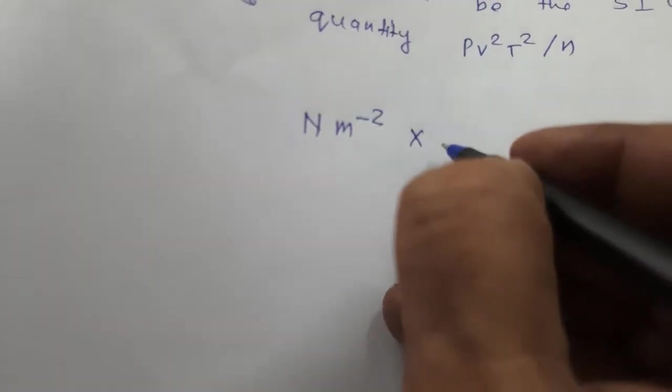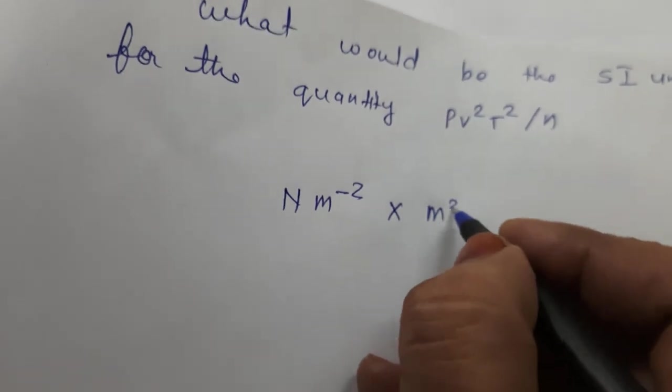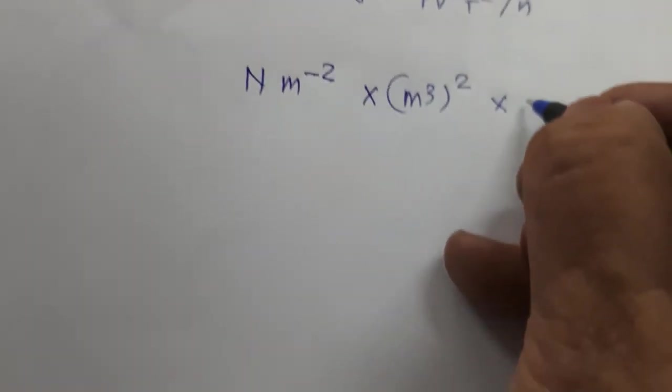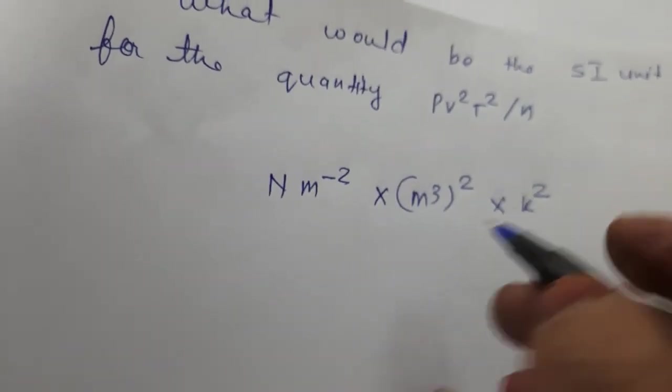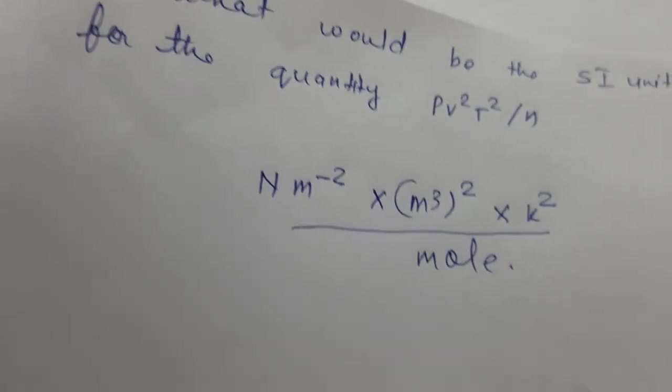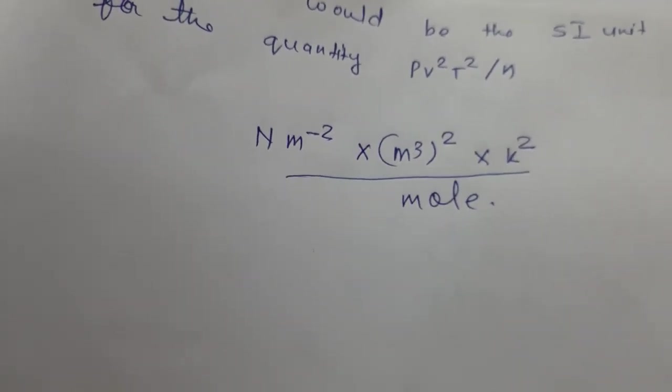What is the SI unit of pressure? Newton per meter square, which is Newton meter raised to minus 2. What is for V? Meter cube, meter raised to 3. Its square is 2 into 3 equals 6. Temperature is Kelvin square, divided by mole. N's unit is mole. So we have written this.